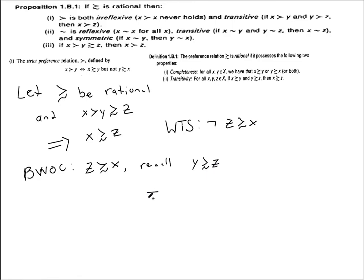So then from transitivity this gives us that y is weakly preferred to x, but this is a contradiction. It contradicts what we assumed right here, that x is strictly better than y. So this means this gives us that x is weakly preferred to z and not z weakly preferred to x.